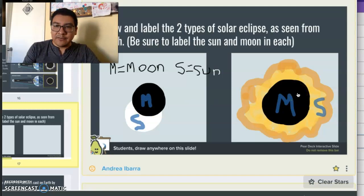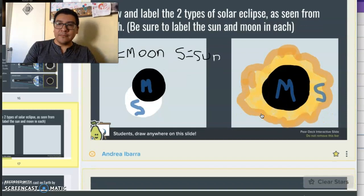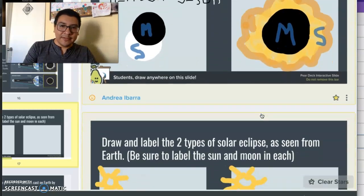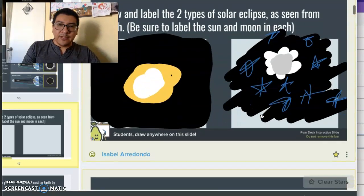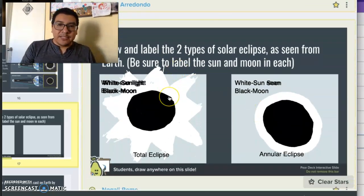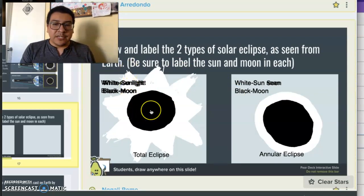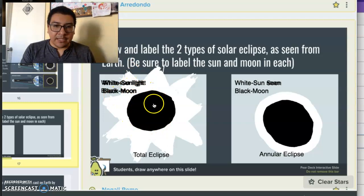And on the right side, we have a total eclipse. And we can tell that because the ring of sunlight that's coming around is not a solid ring.